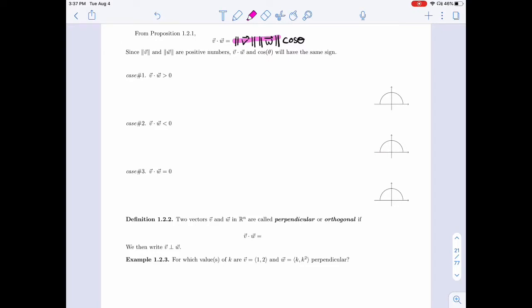And so if cosine is negative, then the dot product is negative and vice versa. And if the dot product is positive, then cosine is positive and vice versa.